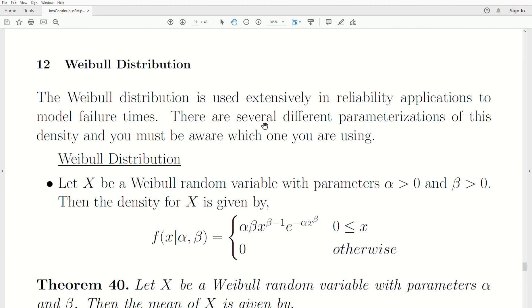The Weibull distribution is used extensively in reliability applications to model failure times. There are several different parameterizations of this density, and you must be aware of which one you are using. The parameterization that we're going to cover is actually a little bit different than the parameterization that the R software uses.